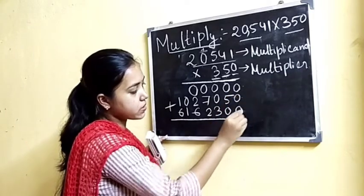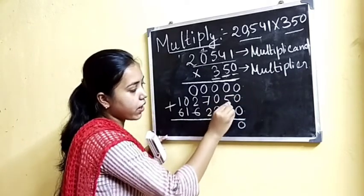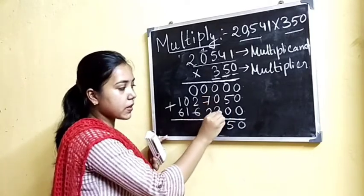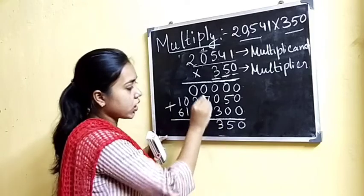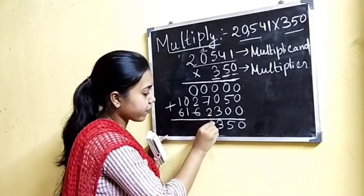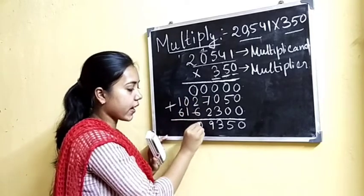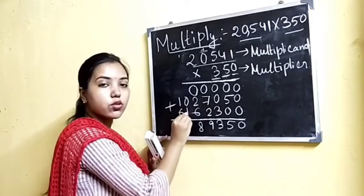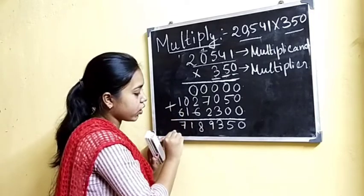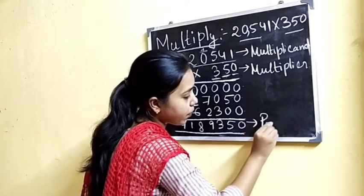Zero plus zero plus zero is zero. Zero plus five plus zero is five. Zero plus zero plus three is three. Zero plus seven plus two is nine. Zero plus two plus six is eight, zero plus one is one. And one plus six is seven. So this is our answer. This is also called the product.